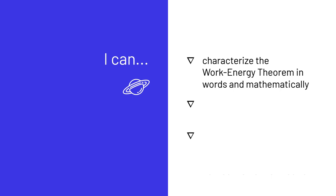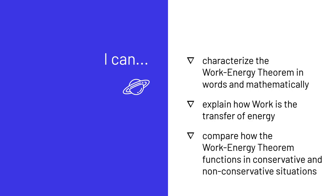The success criteria for this lesson are: I can characterize the Work Energy Theorem in words and mathematically. I can explain how work is the transfer of energy. And finally, I can compare how the Work Energy Theorem functions in conservative and non-conservative situations.